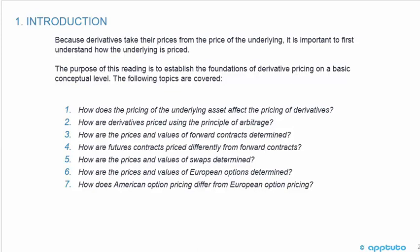The following topics are covered: 1. How does the pricing of the underlying asset affect the pricing of derivatives? 2. How are derivatives priced using the principle of arbitrage? 3. How are the prices and values of forward contracts determined? 4. How are futures contracts priced differently from forward contracts? 5. How are the prices and values of swaps determined? 6. How are the prices and values of European options determined? And finally, 7. How does American option pricing differ from European option pricing?